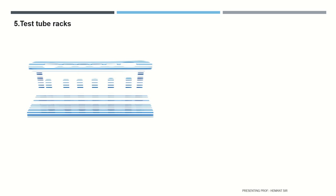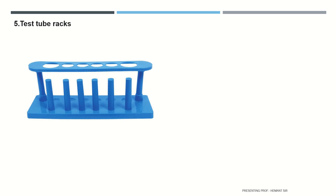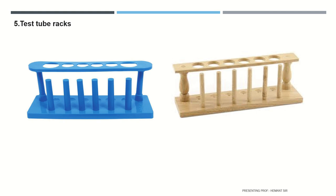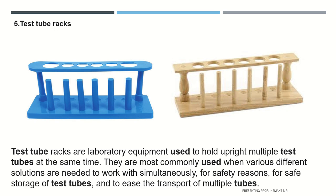The fifth item is the test tube rack. It may be in plastic form or wooden form. Test tube racks are laboratory equipment used to hold multiple test tubes upright at the same time. They are most commonly used when various different solutions are needed to work with simultaneously, for safe storage of test tubes, and to ease the transport of multiple tubes.